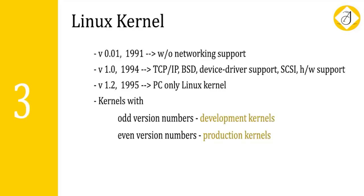The Linux kernel has gone through different versions. The initial version was developed in the year 1991, known as version 0.01. It was developed without any networking support — meaning it could not communicate over the internet. It runs only on the 80386-compatible Intel processor and had limited device driver support, supporting only the Minix file system.